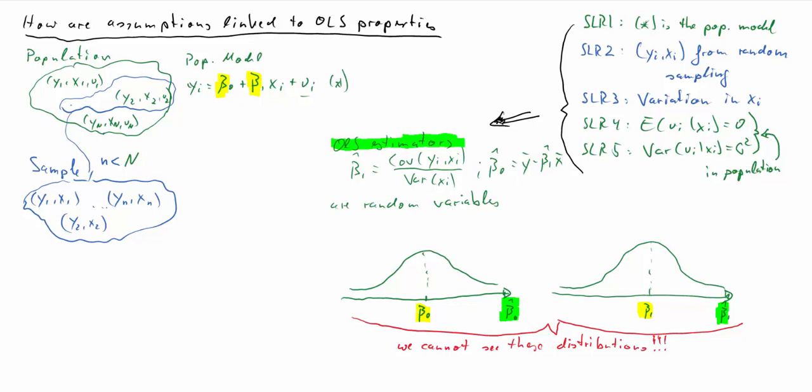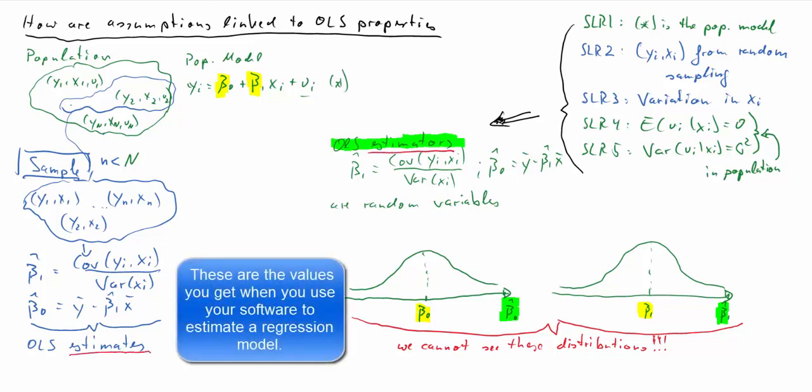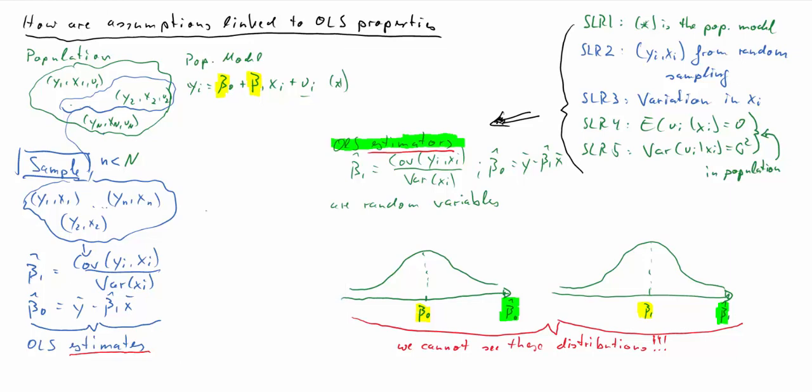What we actually can see is the sample of data, our blue sample of data. That's what we can see. And once we have this sample, we can actually calculate estimates beta 1 hat and beta 0 hat. So we need to be clear that we differentiate between the values which we can calculate on the basis of our sample data. These are the blue versions here and our random variables, the green versions. Now, these blue versions, once we have our data and can calculate them, we call them the OLS estimates. And they are draws, individual draws from these distributions, which of course we cannot see. All we see is that one draw.